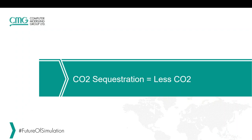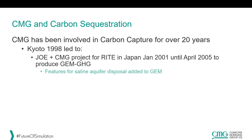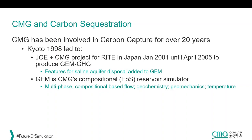More recently, the focus has shifted: rather than just increasing oil production, people now want to actually get rid of far more CO2 than any EOR project would need — the concept of CO2 sequestration. CMG has been involved in carbon capture and CO2 sequestration for over 20 years. It all started back in Kyoto, Japan in 1998, which led to a joint research project between Japan Oil Engineering and CMG for the Research Institute of Technology of the Earth in Japan.